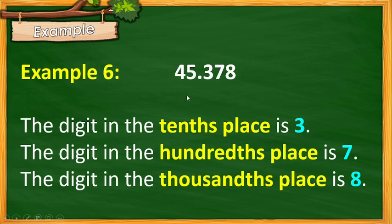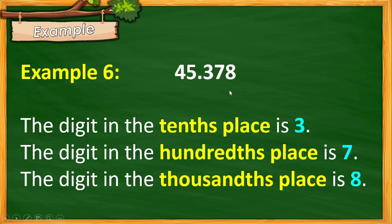Example number 3: We have 45 and 378 thousandths. Let's determine each digit for the following places. The digit in the tenths place is 3. The digit in the hundredths place is 7. The digit in the thousandths place is 8. Take note: the first digit to the right of the decimal point is tenths, the second is hundredths, and the third is thousandths.